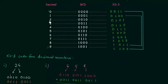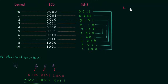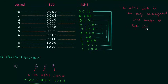The complement of 2 should give 7. XS3 for 7 is 1010, and the complement of 1010 is 0101, which is XS3 for 2. Complement of 1001 (which is 6) is 0110 (which is 3), and complement of 1000 (which is 5) is 0111 (which is 4). So XS3 code is confirmed to be a self-complementing code.